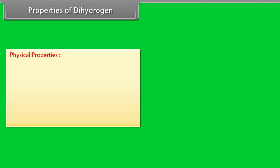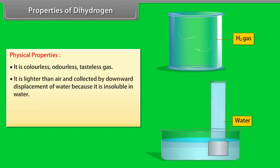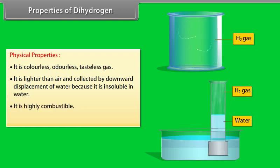Properties of dihydrogen. Physical properties. It is colorless, odorless, tasteless gas. It is lighter than air and collected by downward displacement of water because it is insoluble in water. It is highly combustible. It is the lightest of all elements.